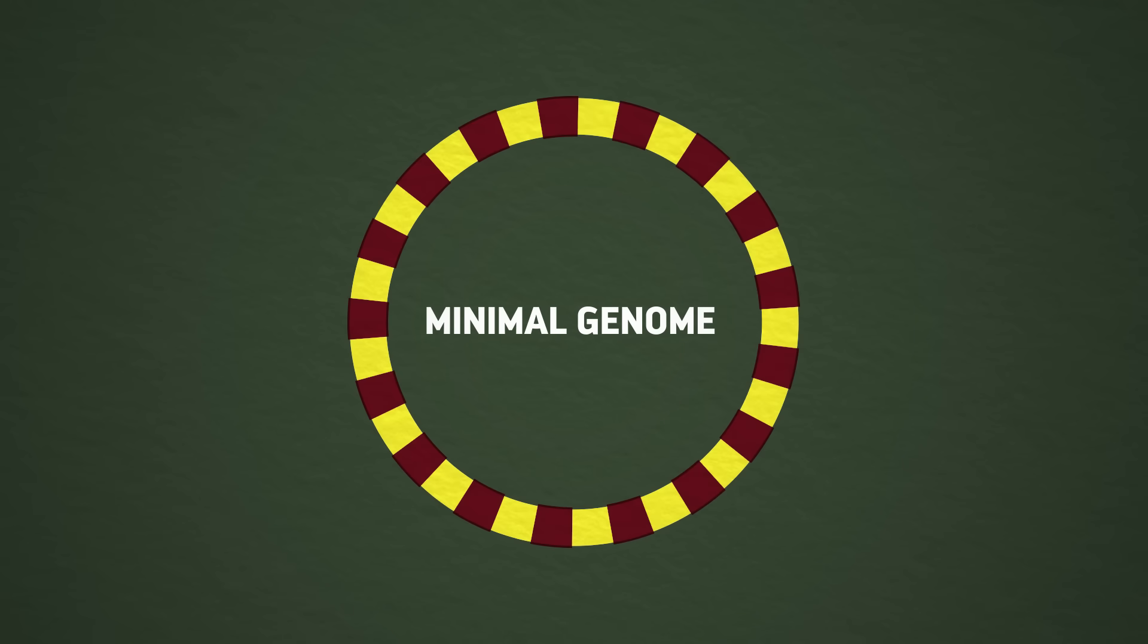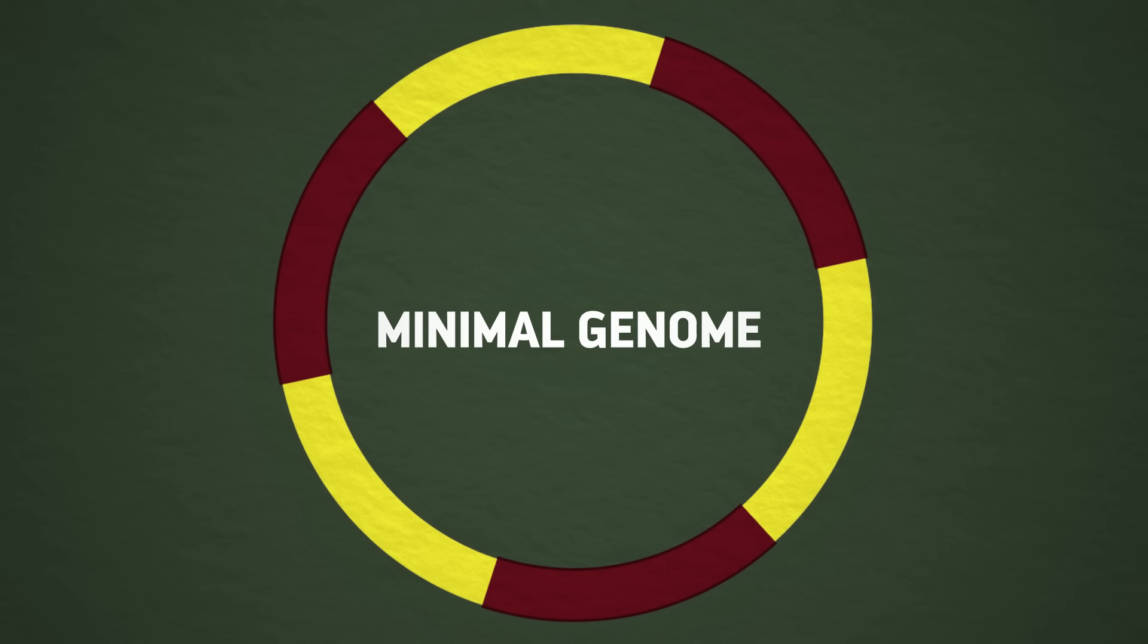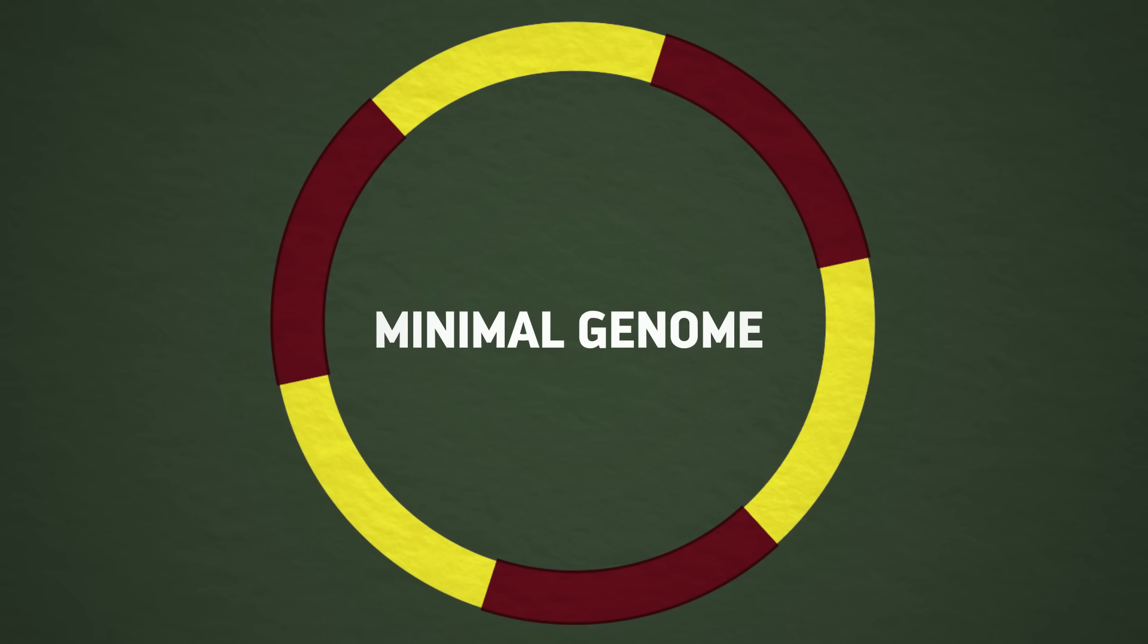One way they do that is by finding what they call the minimal genome, the smallest amount of genes that a cell can have and still survive. Since these most basic, essential genes are thought to have come from LUCA, if we could identify them, that would tell us how LUCA looked and lived.